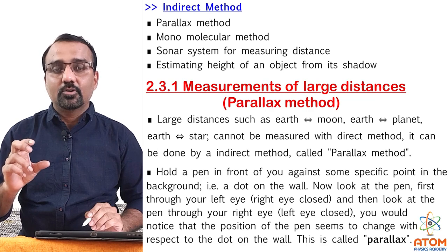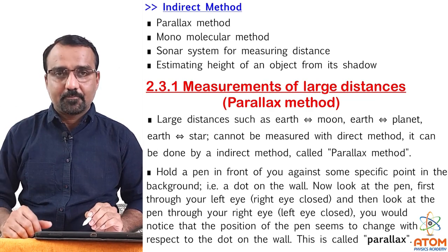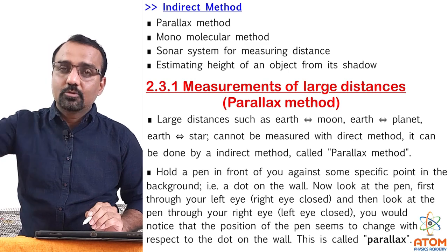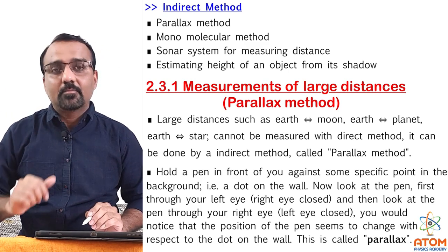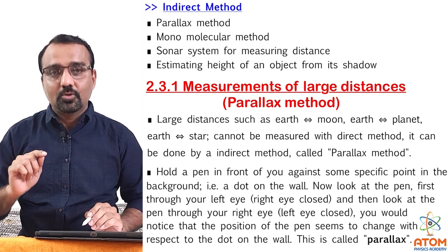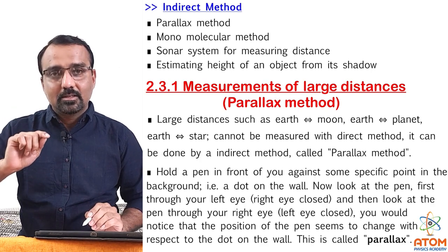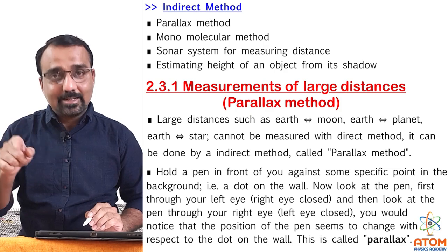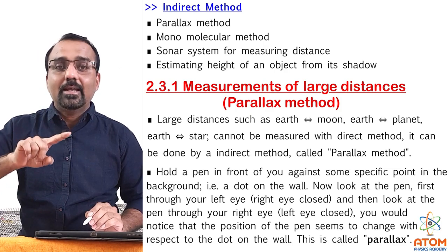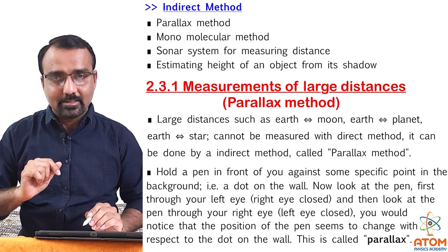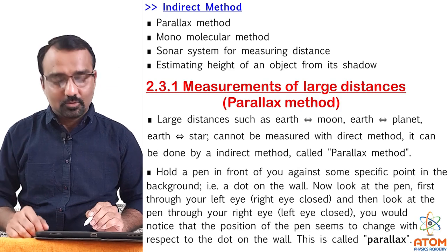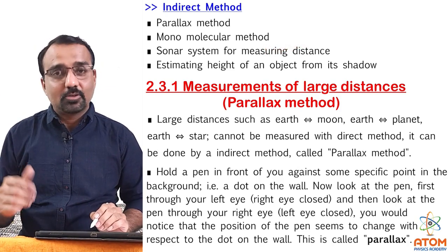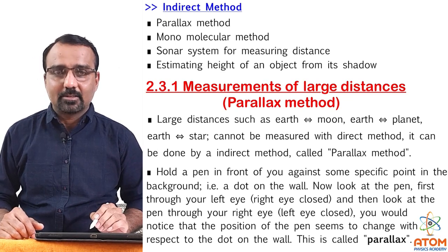Sonar basically produces audio signals. This audio signal travels up to that object and returns back. Within this travel, the signal takes some time. From that time and the speed of the sonar signal, we can determine the distance of that object. So this is obviously an indirect method.